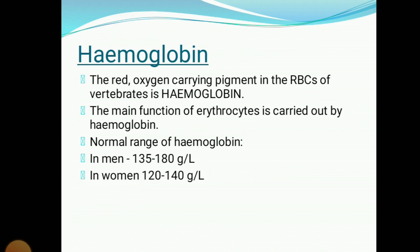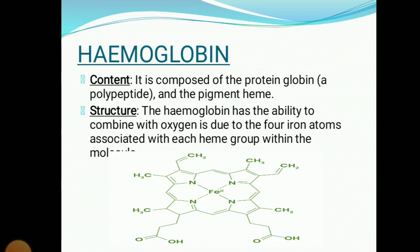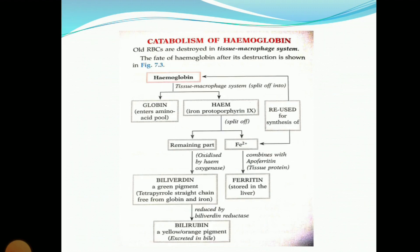Hemoglobin is composed of the protein globin and the pigment heme. The basic structure of hemoglobin is shown here — you can also find this in the book A.K. Jan. In the next topic, we will see the catabolism of hemoglobin, which is one of the most important topics of hemoglobin.